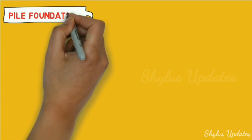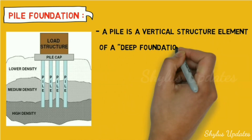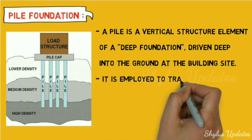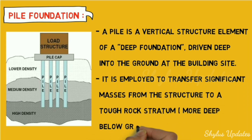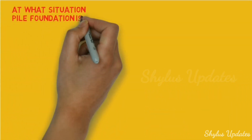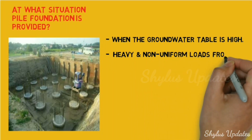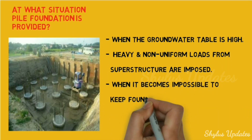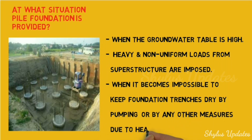Pile foundation: a pile is a vertical structural element of a deep foundation driven deep into the ground at the building site. It is used to transfer significant loads from the structure to a tough rock stratum that is deep below ground level. Pile foundation is provided when the groundwater table is high, when heavy and non-uniform loads from the superstructure are imposed, or when it becomes impossible to keep foundation trenches dry by pumping or other measures due to heavy inflow of seepage.